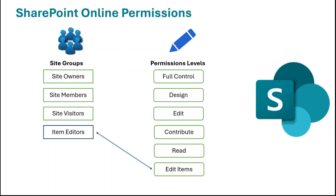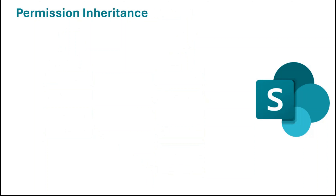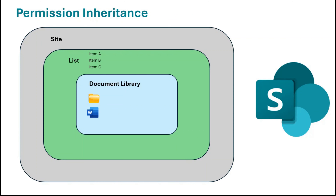Apart from groups and permission levels, there are many other things in SharePoint permissions. For now, let's talk about permission inheritance. By default, a SharePoint site, list, and document libraries inherit the same level of permissions that are assigned on the site level.